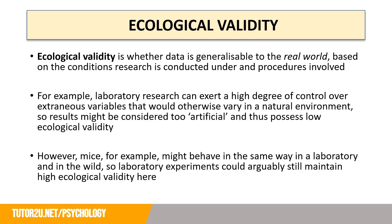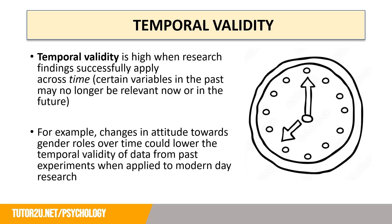The lesson is that it depends what participants you are using. The second type of external validity is temporal validity. Temporal validity is high when research findings can be successfully applied across time. Certain variables in the past may no longer be relevant now or in the future. An easy way to remember this is that temporal begins with a T, and so does the word time. For example, changes in attitudes towards gender roles over time could lower the temporal validity of data from past experiments when we try to apply them to modern day research.